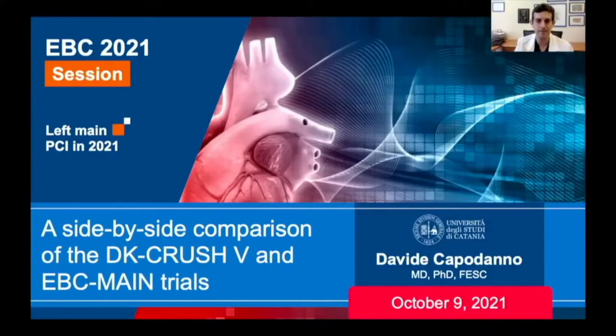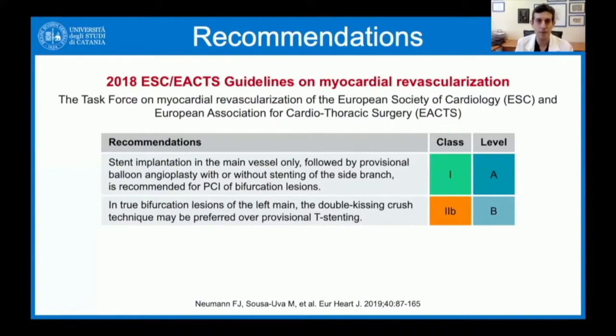A good starting point could be to remind you about the current recommendations regarding bifurcation stenting strategy from the 2018 ESC/EACTS guidance on myocardial revascularization. We have one recommendation for the provisional approach: stent implantation in the main vessel only, followed by provisional balloon angioplasty with or without stenting on the side branch, recommended for PCI of bifurcation lesions — class 1, level of evidence A.